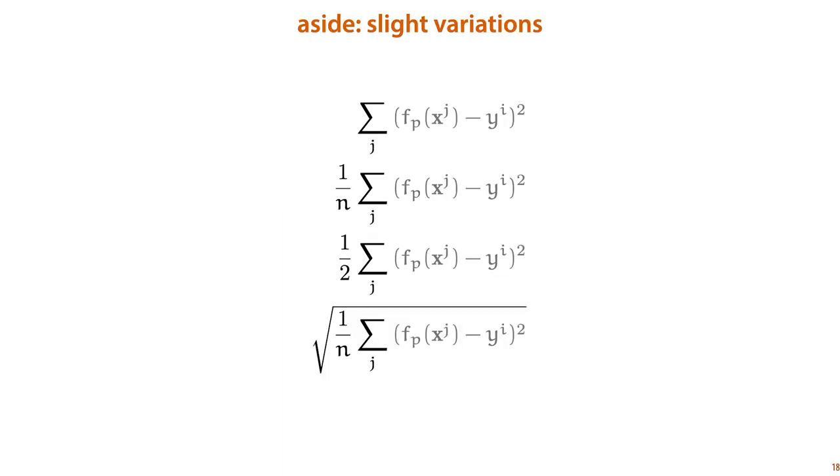We should also note that there are a lot of slightly different ways of writing the squared error loss. Sometimes we take just the sum, sometimes we take the average, sometimes we add a factor of one-half in front, so that the derivative works out a little nicer, and sometimes we take the square root. In practice, most of these variations don't matter that much, because we're not that interested in the absolute value of the loss. We're just interested in the model for which the loss is minimized. So with that, we have a functional form for our model and an expression of the loss. In the next video, we'll see how to search the space of all models for a model that gives us a low loss.